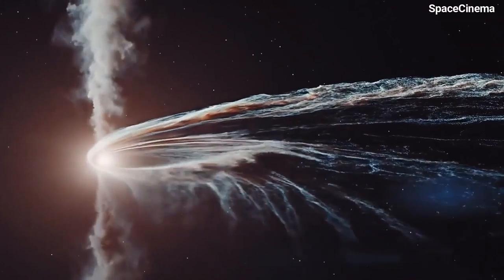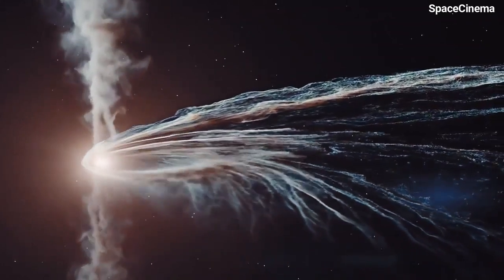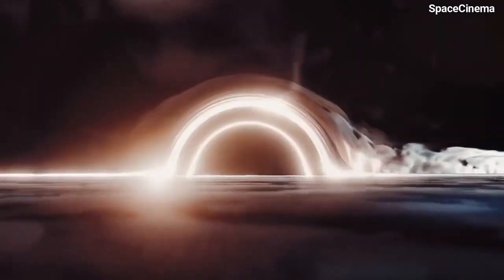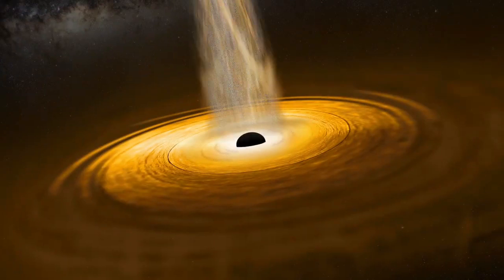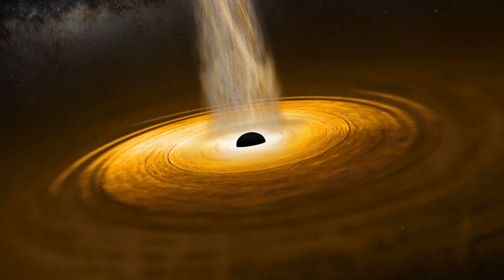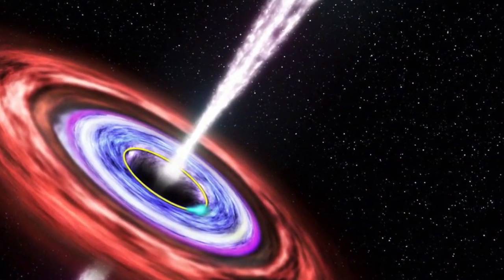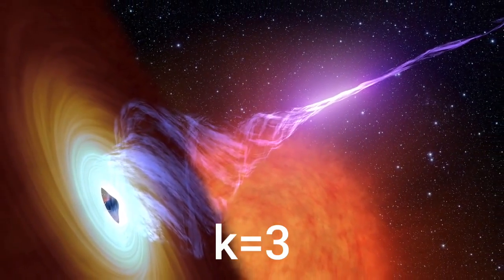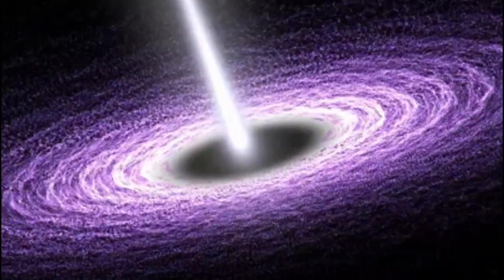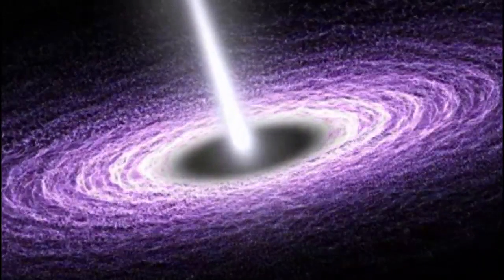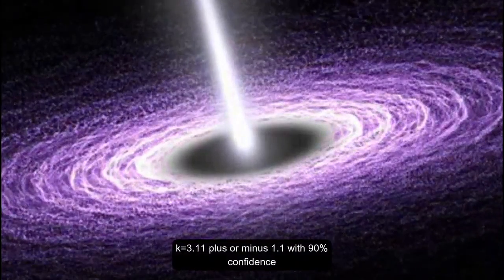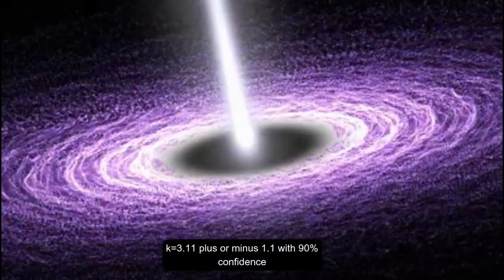They present a model in which they assume some kind of k coupling between black holes and dark energy. In very simple terms, if the evolution of dark energy growth matches the evolution of supermassive black hole mass growth, you could hypothesize that there must be some connection depending on how strong the correlation is. In practice, this means that there is no connection between dark energy and black holes if k equals 0. But if k equals 3, the match is perfect. Well, surprise! The result shows that k equals 3.11 plus or minus 1.1 with 90% confidence.